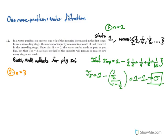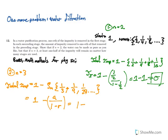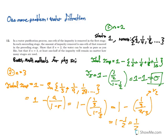Now let's consider n equals three. Total impurity equals one minus the sum of our geometric series: one-third, plus one-ninth, plus one over twenty-seven, et cetera. This equals one minus a over one minus r, which is one minus one-third over two-thirds. One-third over two-thirds equals one-half. So this equals one minus one-half, which equals one-half. In the case where n equals three, no matter how many water purification stages we go through, we'll never eliminate more than half of the total impurity. This is another example of using geometric series in a real-world application.